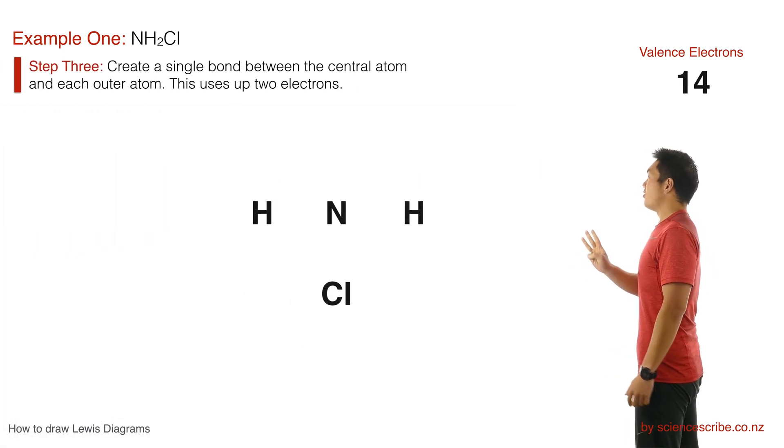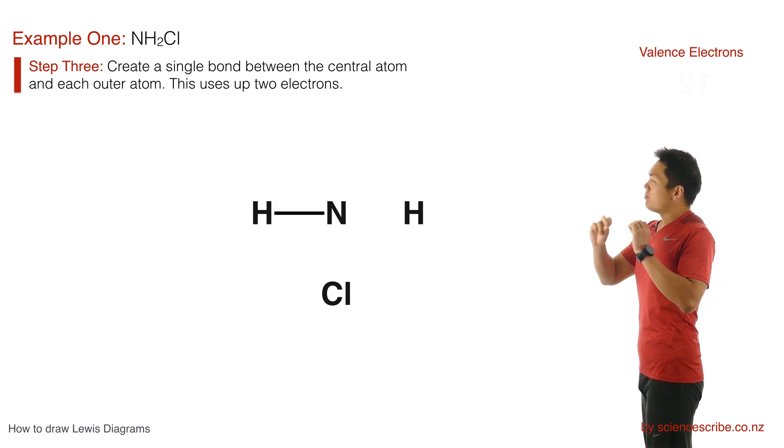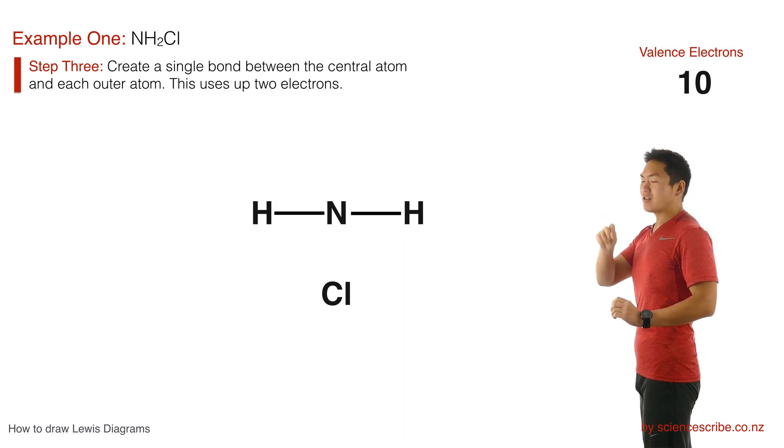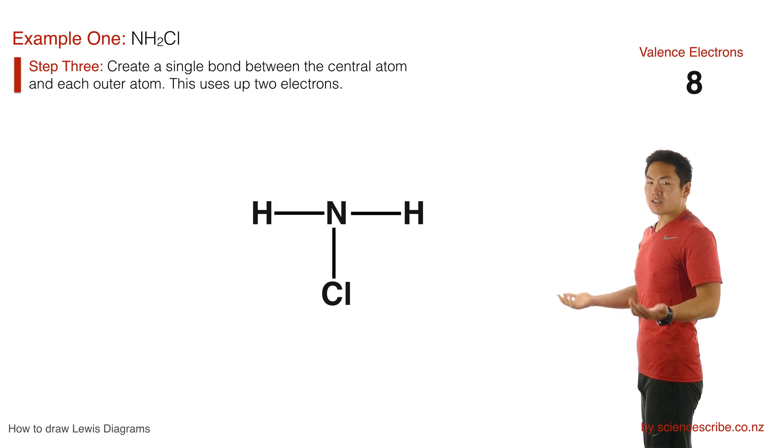The third thing we're going to do is to create single bonds from the central atom to the outer atom. Each single bond is represented by a line. Each single bond represented by this line also represents two electrons. So out of the 14 electrons we had, we're going to pull out two electrons at a time to create single bonds. When we do that, you can see that I made three single bonds, so I used six electrons. That brings me down to eight.